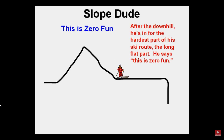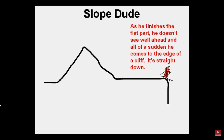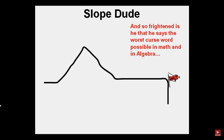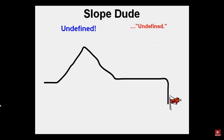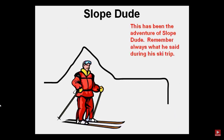And now after the downhill, he's in for the hardest part of the ski run — the long flat part. He says, 'this is zero fun.' As he finishes the flat part, he doesn't see well ahead, and all of a sudden he comes to the edge of a cliff — it's straight down. So frightened is he that he says the worst curse word possible in math and algebra: undefined. This has been the Adventure of Slope Dude.